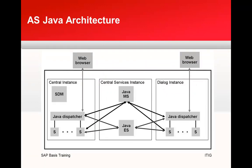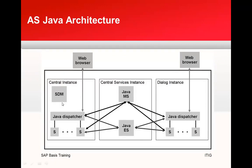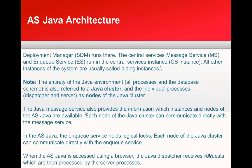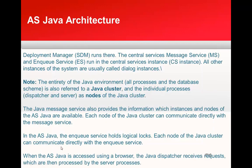In the Java architecture, the SDM — software deployment manager — runs within the central instance, alongside the central services message service and enqueue server. The central services instance and central instance contain these core components, while the dialog instance has just a Java dispatcher. Importantly, the entirety of the Java environment — all processes and the database schema — is referred to as a Java cluster. This is not an HA cluster, but rather all components collectively.